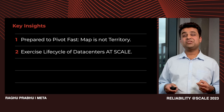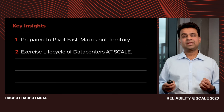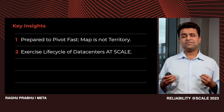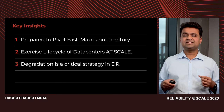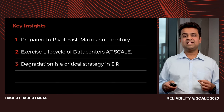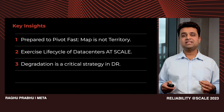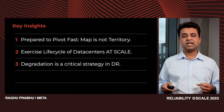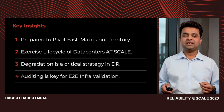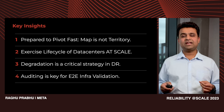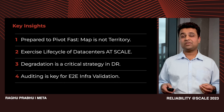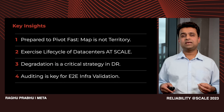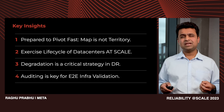Second, test your data centers and key fault domains through a complete lifecycle — only by exercising and recovering successfully at scale can sufficient confidence toward large-scale risks be achieved. Third, degradation is a critical strategy in DR as a complementary solution to prevent site overload. Don't be afraid to degrade your entire infra during disasters, especially given current supply chain and capacity crunch problems. Finally, auditing is key for end-to-end infra validation — testing service degradation in production is critical, but auditing is equally important to extrapolate signals and reason about MRDR readiness for the entire infrastructure.